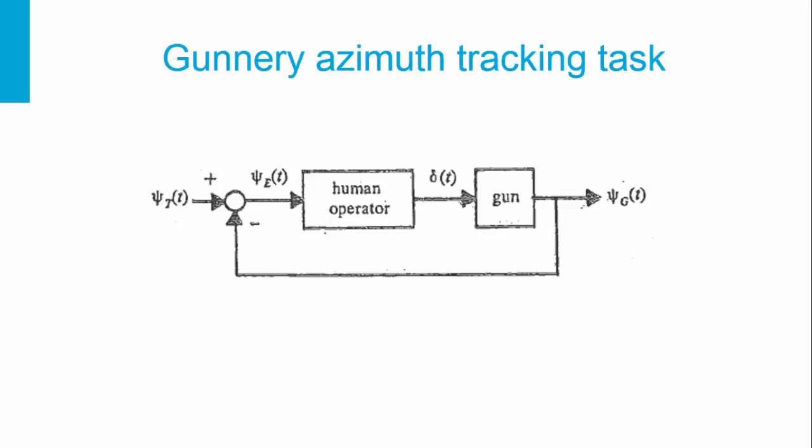In reality, the human is also using other information — for example, the target line of sight CG, the input information. This we call pursuit behaviour. For the moment, we are going to assume in our PID controller only the compensatory behaviour of the human.